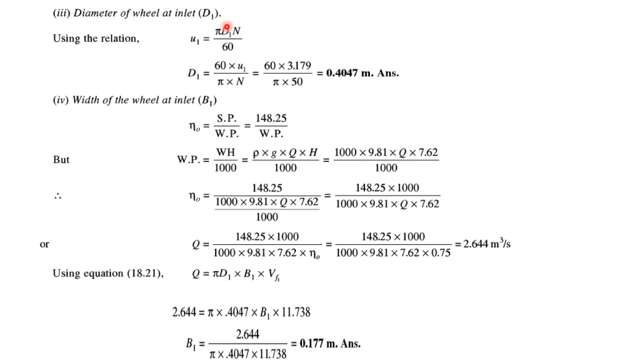Diameter of the wheel at inlet D1: using the relation U1 = πD1N/60, that comes to 0.4047 meters.